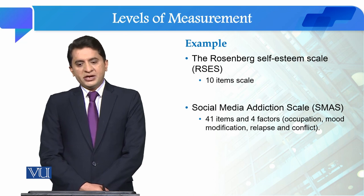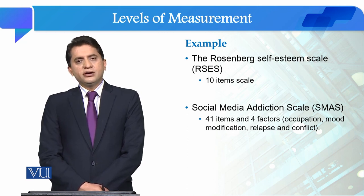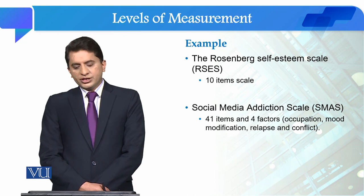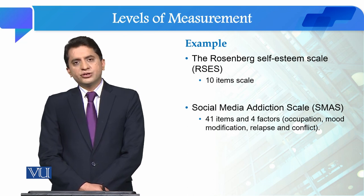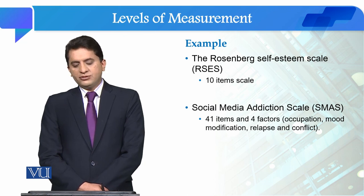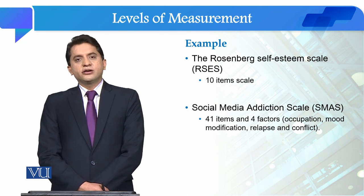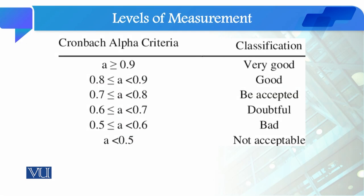This situation has an overall scale, and we can compute Cronbach's Alpha for it as well as for the sub-constructs, which are four factors: occupation, mood, modification, relapse, and conflict. For these four sub-constructs, we can compute Cronbach's Alpha. The Cronbach's Alpha value ranges from zero to one, computed using a statistical formula.